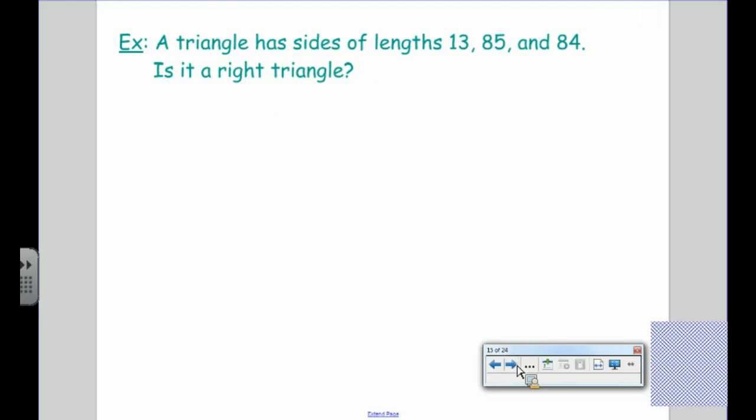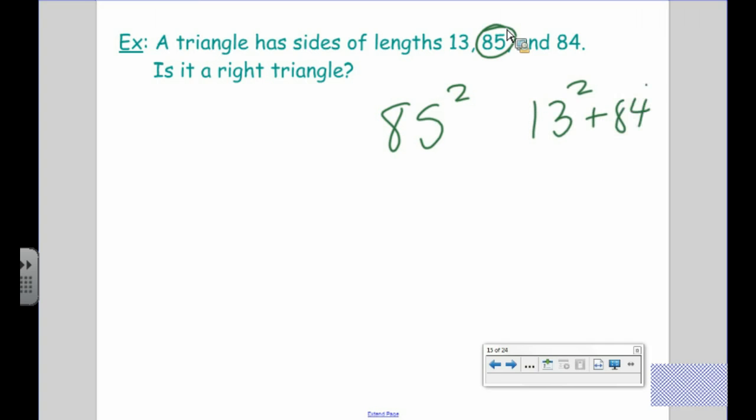Try this one. 13, 85, 84. Okay. We're saying yes. I didn't trick you because I put c in the middle. I didn't list them from shortest to longest. I guess that didn't trick you at all. So you're going to do 85 squared on the left and then on the right, you're going to do 13 squared plus 84 squared. And when you looked in your calculator, you got that they were perfectly equal. Right? They were equal. So, yes, it's a right triangle because c squared does equal a squared plus b squared.